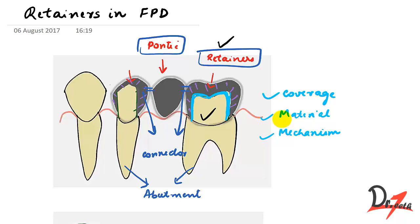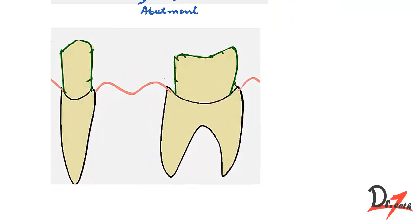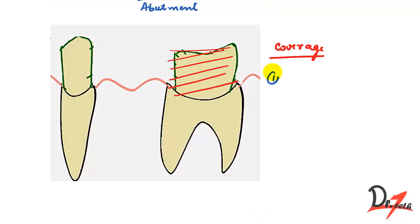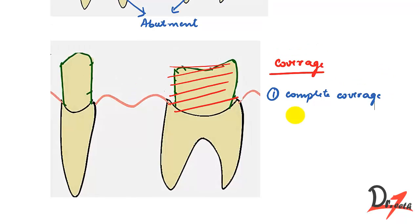On the basis of amount of coverage: if we cover the entire abutment tooth on all surfaces, that is called complete coverage or a full veneer retainer. These cover all surfaces of the abutment tooth and provide maximum retention. This type of retainer is used in cases of extensively damaged abutment teeth, where more support is needed.